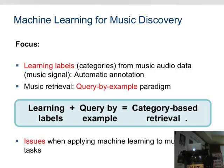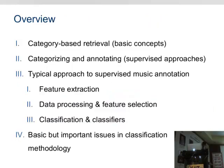Basically you want to retrieve items. When I speak of items, I can mean a whole music recording or just a part of it. You decide what is an item, and an item depends on the task. I call it category-based retrieval. At the end of the talk, I will highlight some of the issues that need to be taken into consideration when using machine learning approaches for this kind of task. The overview is: I will introduce the basic concepts of category-based retrieval, then focus on supervised approaches for learning semantic labels, highlight the typical approach consisting of three main blocks, and discuss issues about classification methodology.